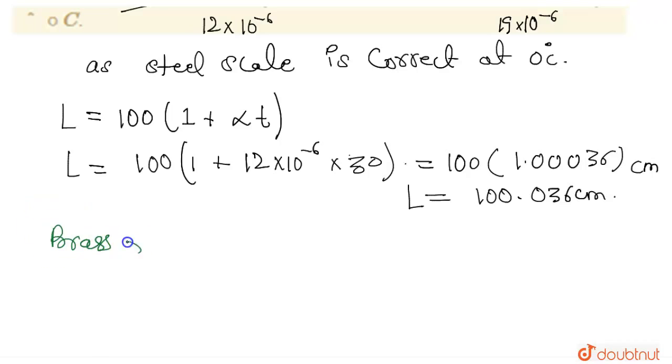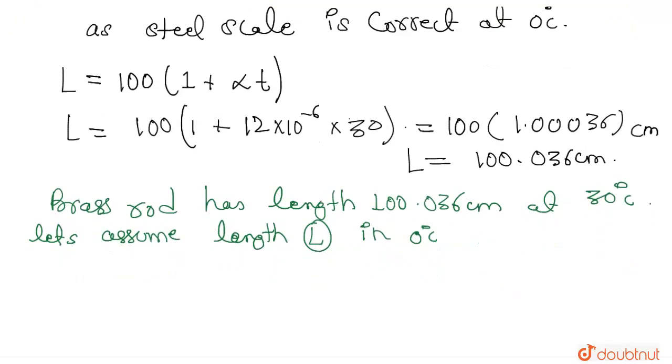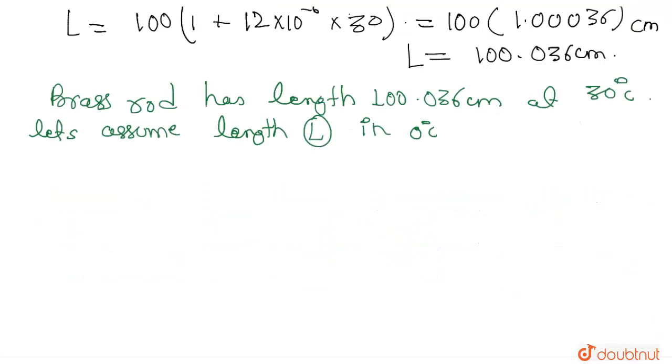So brass rod has length that is 100.036 centimeter at 30 degrees Celsius. Now let's assume length, that is L, that is L at 0 degrees Celsius. So in this case we will use the same formula here.